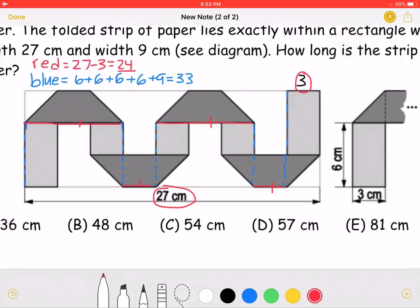In order to find the length of the entire strip, we must add the red, the horizontal portions, to the blue, the vertical portions.